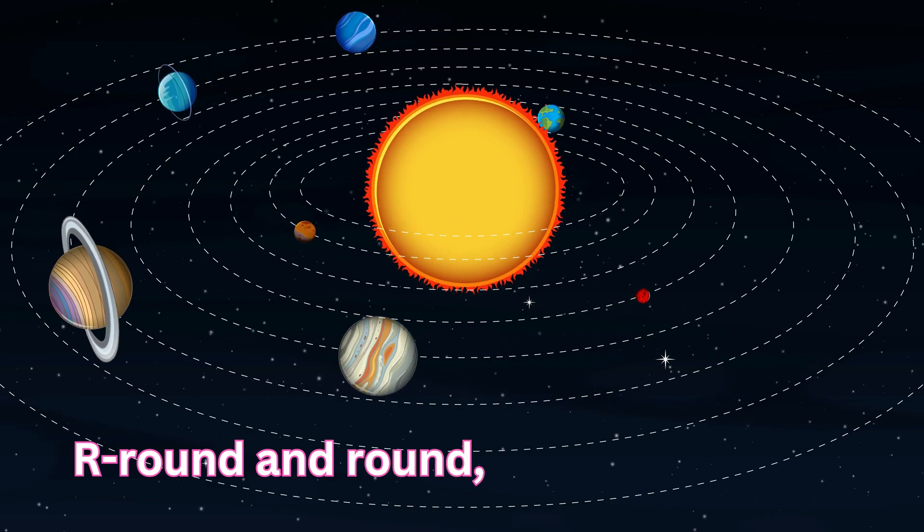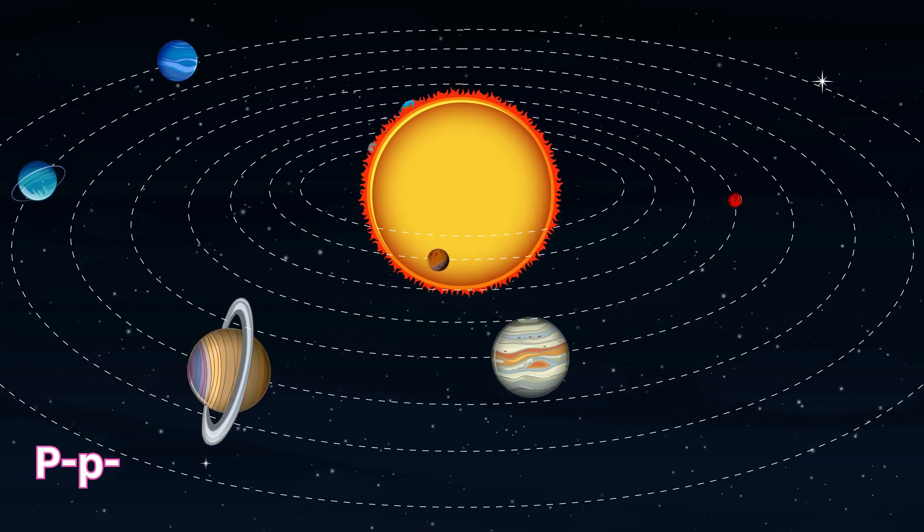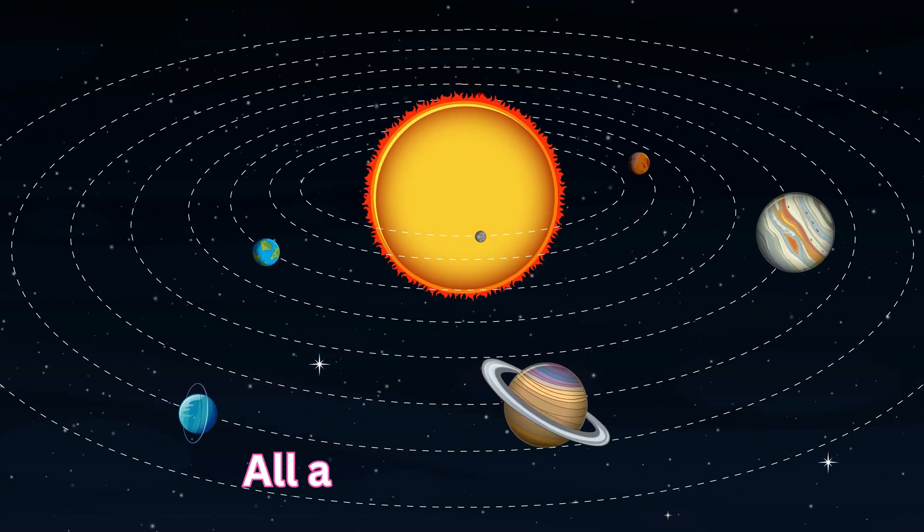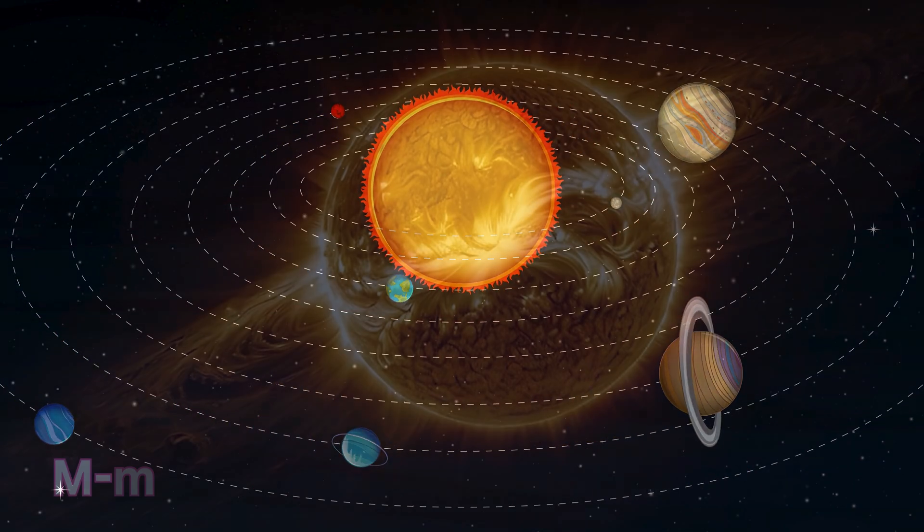Around and round, around and round. Planets in space go round and round, all around the sun.